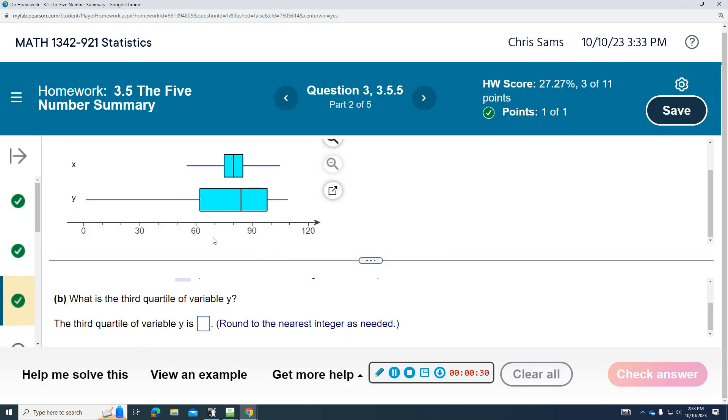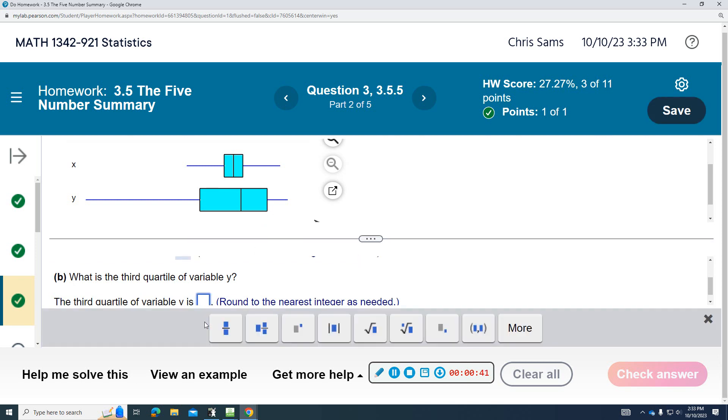What is the third quartile of Y? So if you count the lines, this is first, second, this is the third quartile. So this is between 90 and 100, looks like it's about 98, 99, say 98.